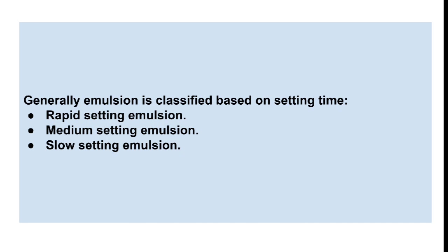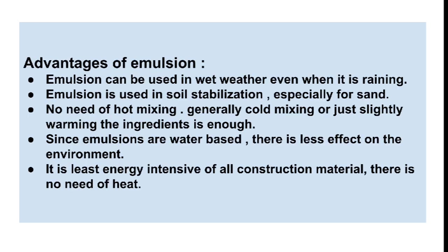Emulsion is also classified based on setting time — the rate at which it sets. There are rapid setting, medium setting, and slow setting emulsions. Rapid setting emulsion is used for surface dressing and penetration mechanisms. Medium setting emulsion is used to pre-mix with coarse aggregate. Slow setting emulsion is very stable compared to rapid setting emulsion.